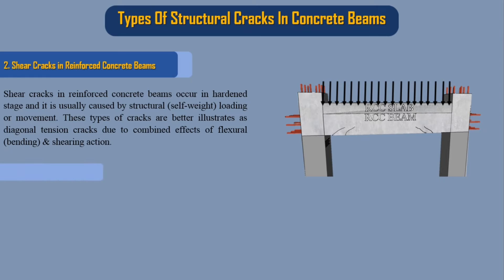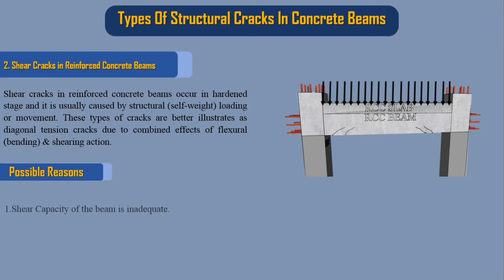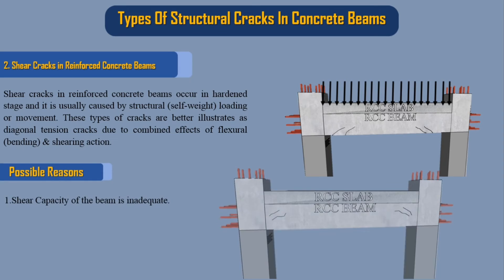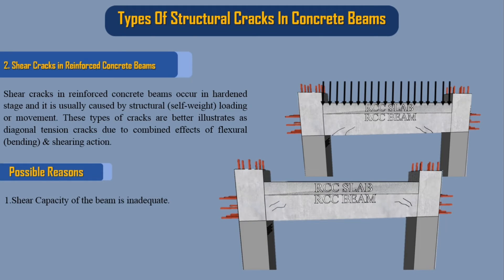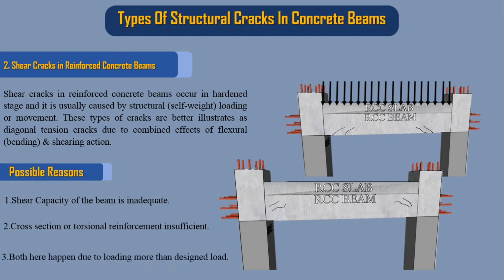Possible reasons for shear cracks: 1. Shear capacity of the beam is inadequate. 2. Cross-section or torsional reinforcement is insufficient. 3. Both can occur due to loading more than the designed load.